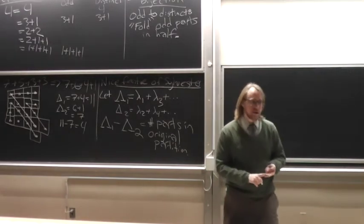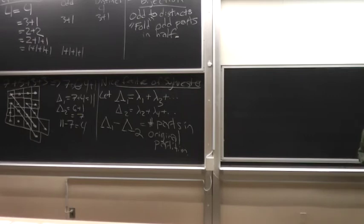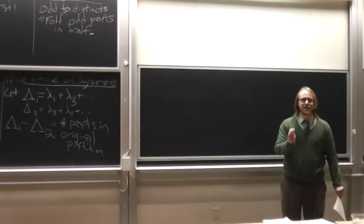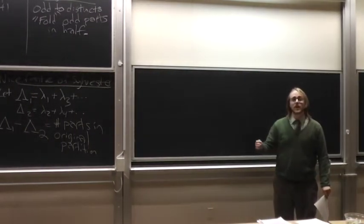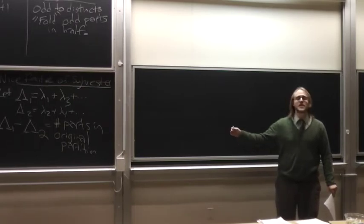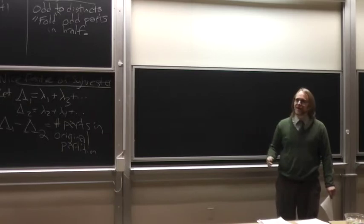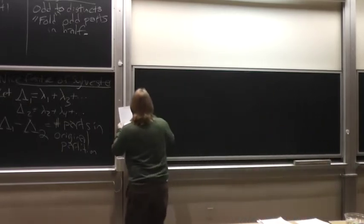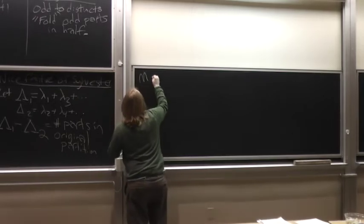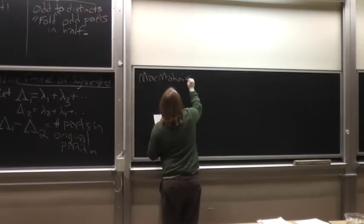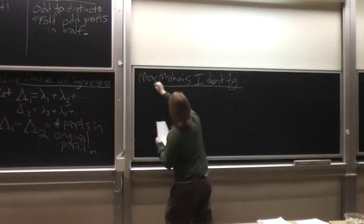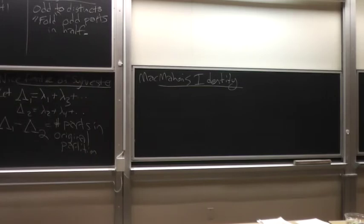Now we're going to talk about Major McMahon. His partition identity — he did a lot of things and was very much an experimentalist at heart. He famously verified Ramanujan's identities up to 89 terms and concluded 'it must be true,' even if he didn't know how to prove it right away. A very good pre-computer experimentalist. McMahon was also fabulous at doing mental arithmetic very quickly — probably one of the best, if not the best, in England at the time.